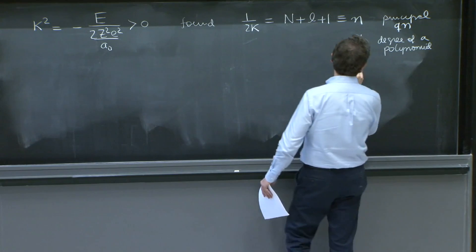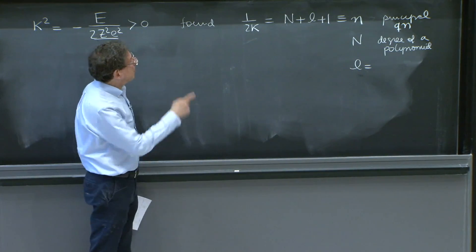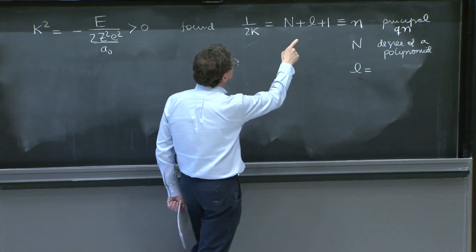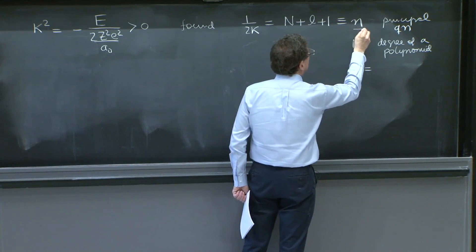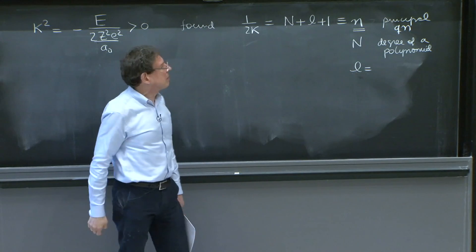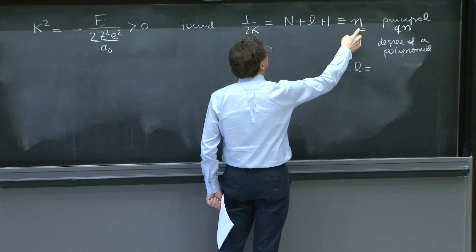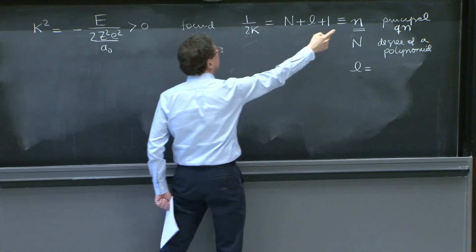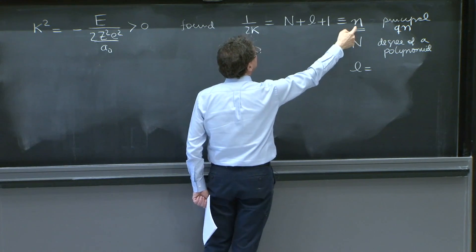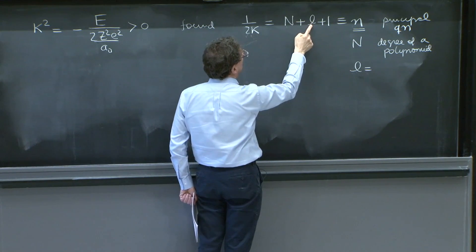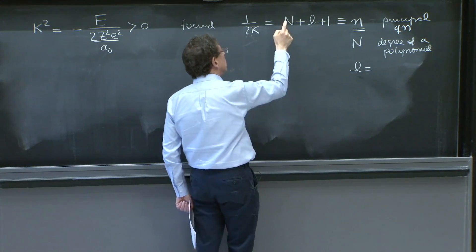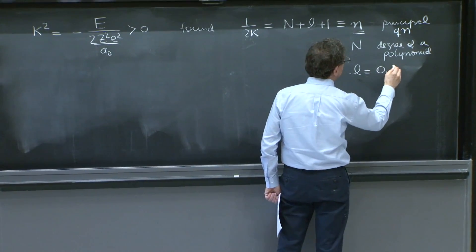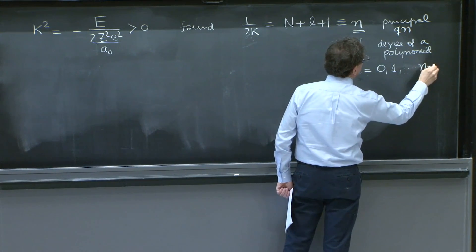And l was an important quantum number because it gave you the amount of angular momentum the system had. Given that we think of it as principal quantum number coming first, once you have n and you fix it, because the energy just depends on n, once you fix n, you'll have that l can go from 0 up to n minus 1.